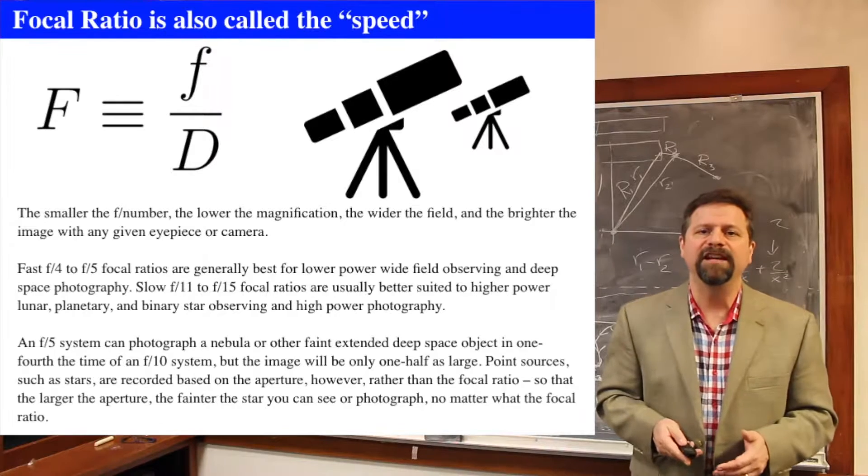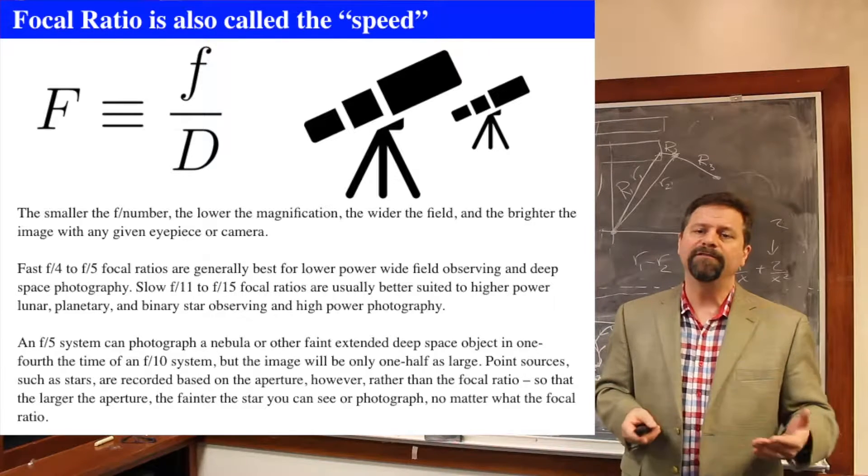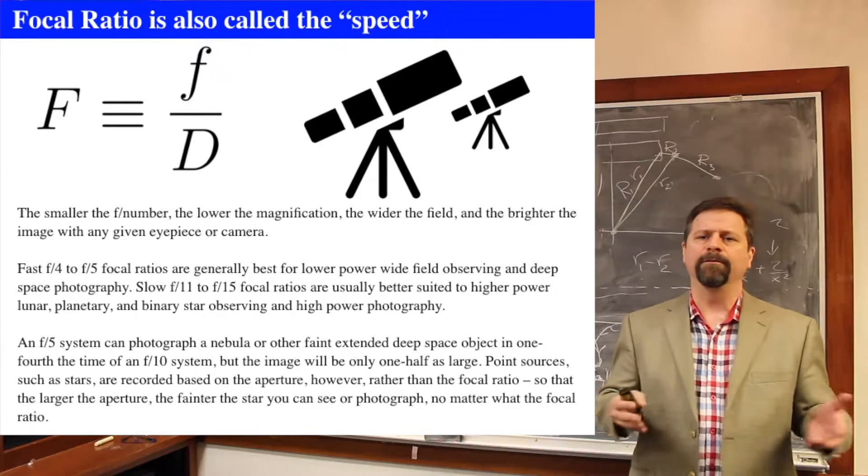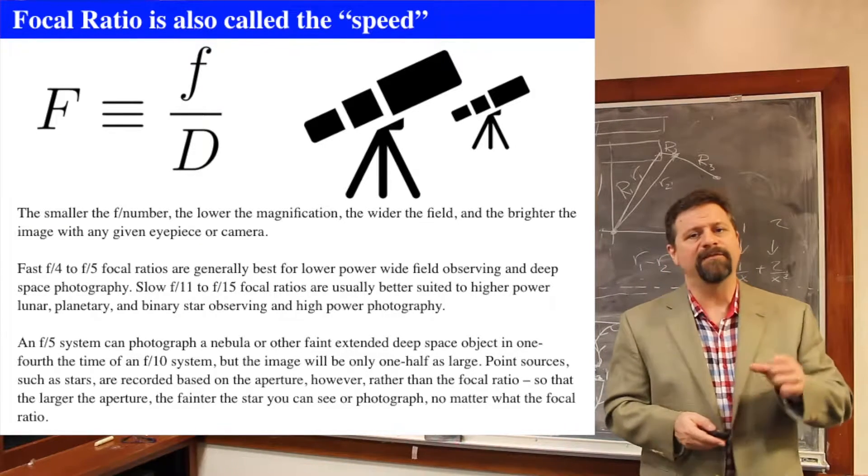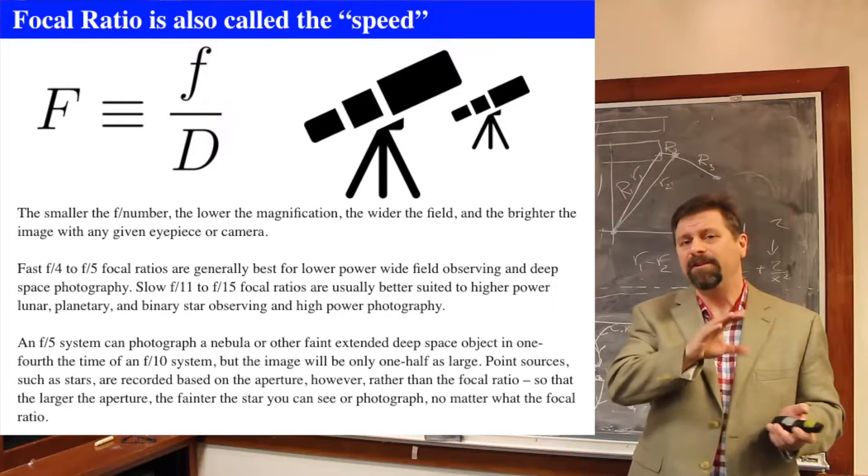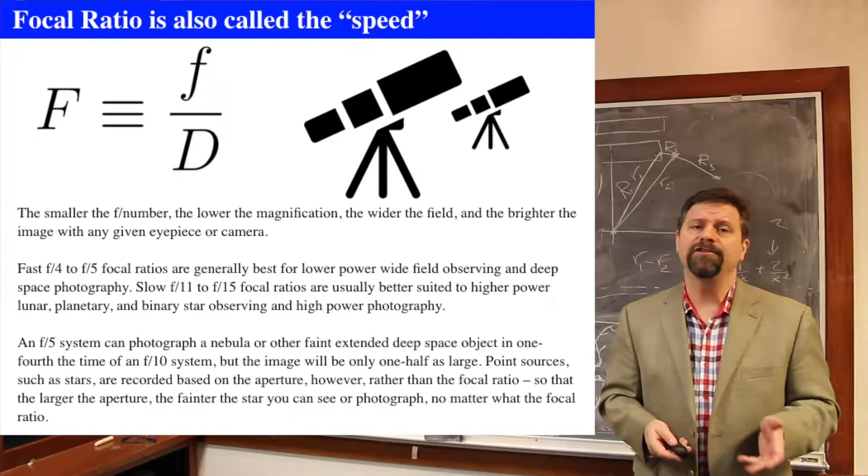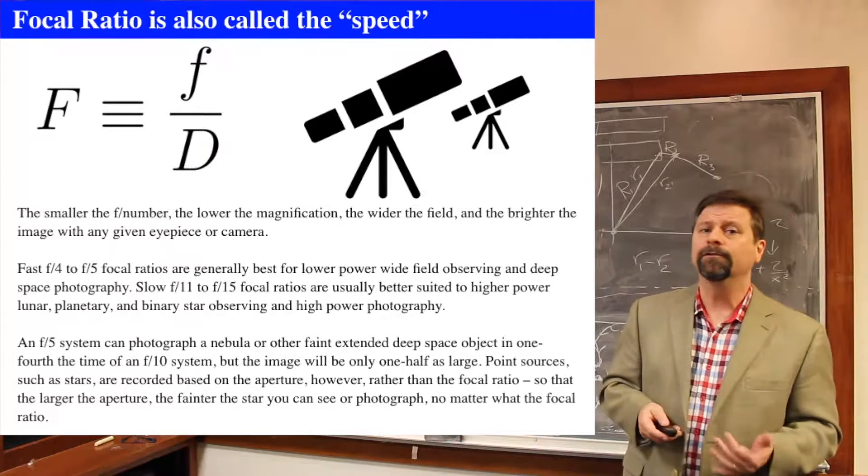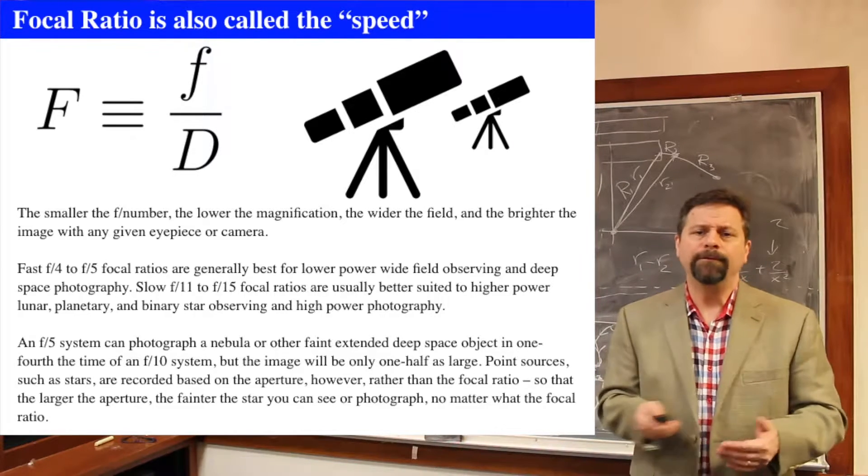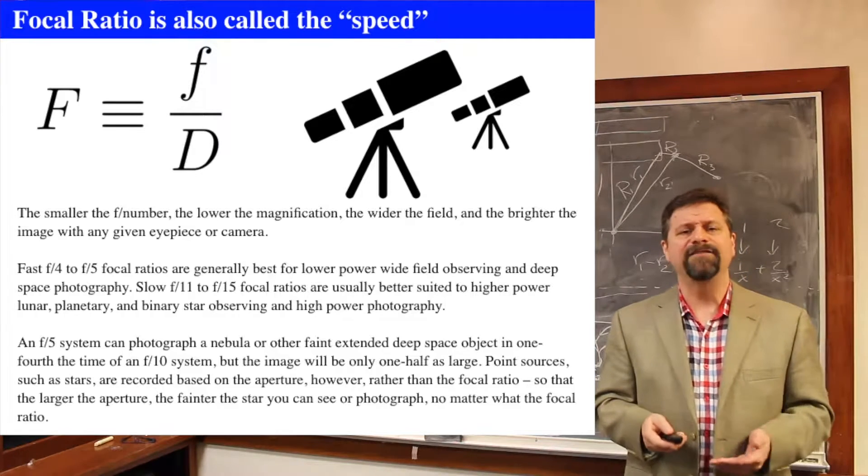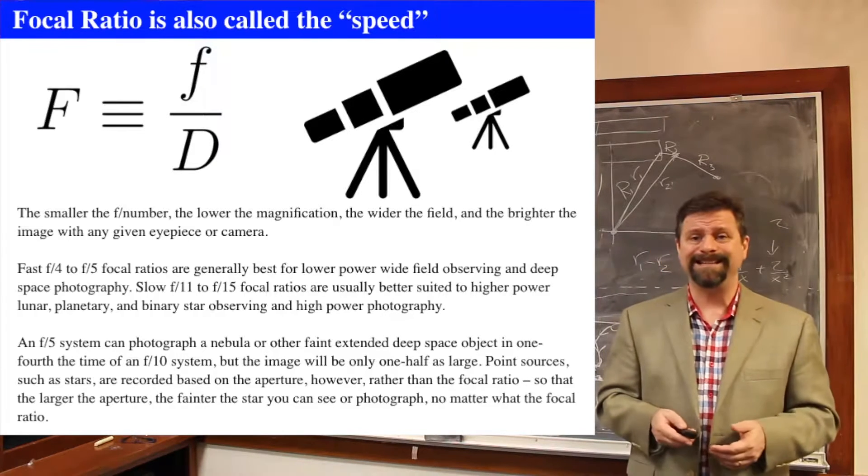So short focal ratios are good for observing wide fields of view and deep space astrophotography. But if you have a slow focal ratio, meaning the focal length is very long, those are usually better suited to high power lunar or planetary observing and binary observing, where we want to get high powers.